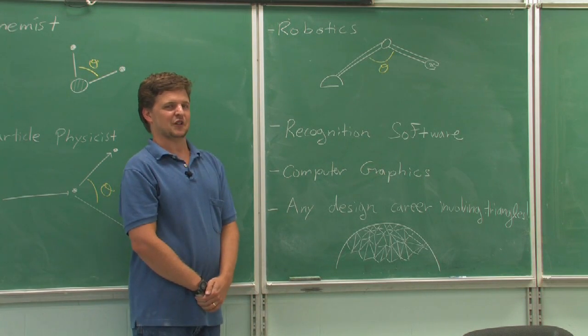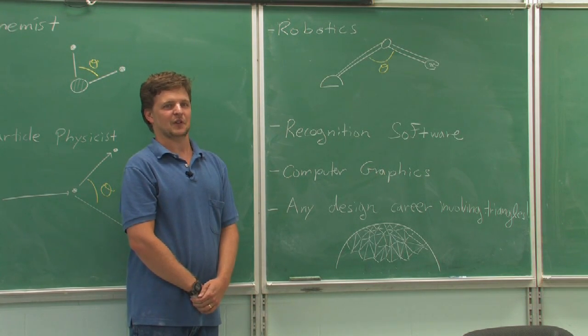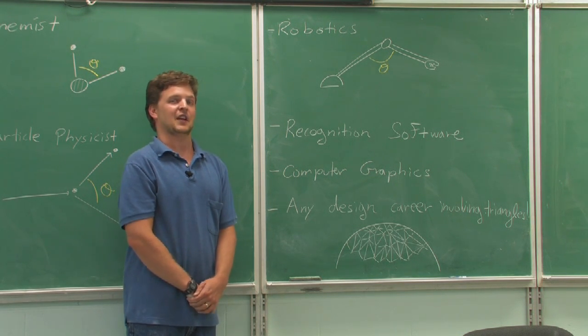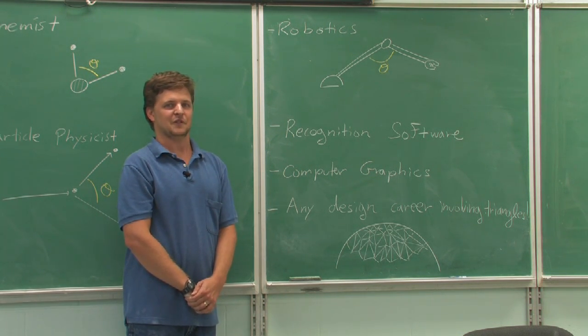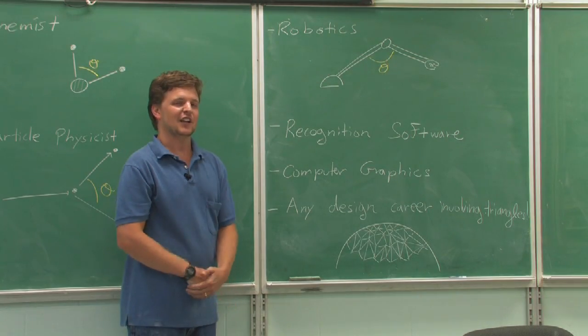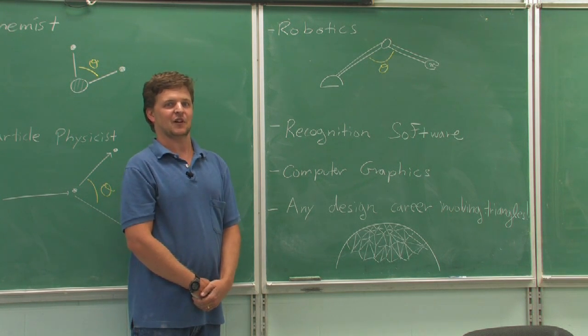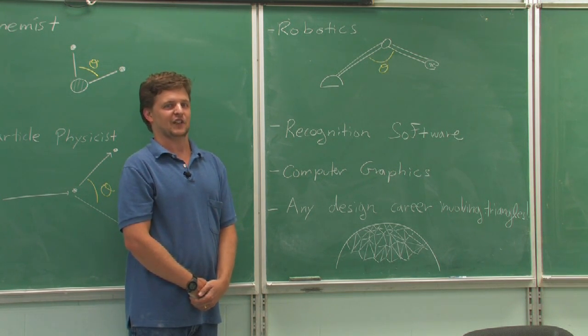Of course, computer graphics, if we want them to be realistic, are going to need a lot of angles, a lot of trigonometry. In order to calculate perspective in three dimensions, shadowing and lighting. In fact, any design career that is going to involve triangles is eventually going to use a little bit of trigonometry here and there.